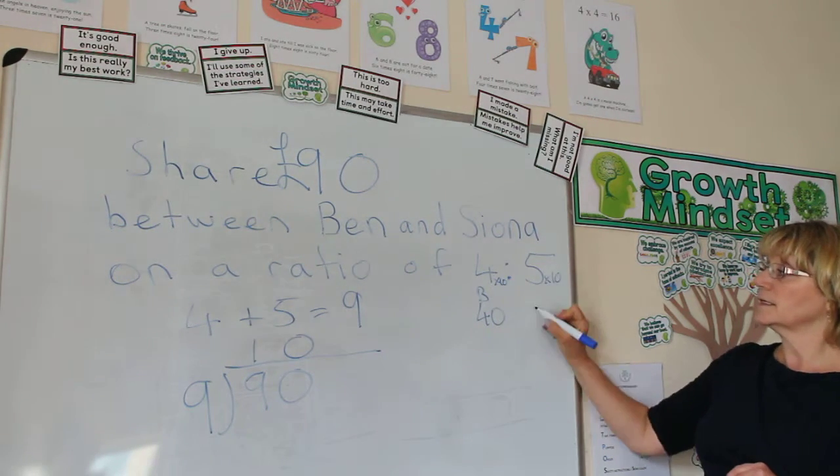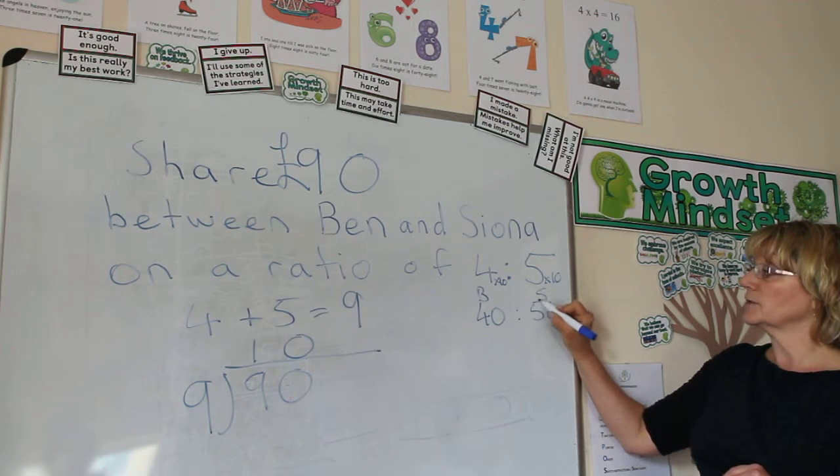And 5 times 10 is 50, and that's what Siona gets.